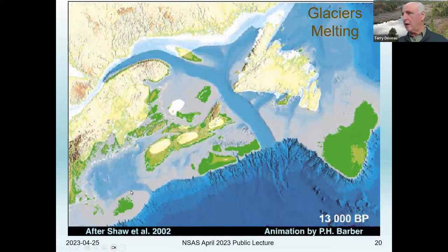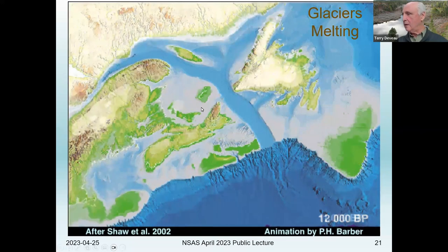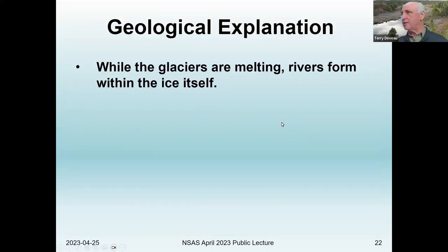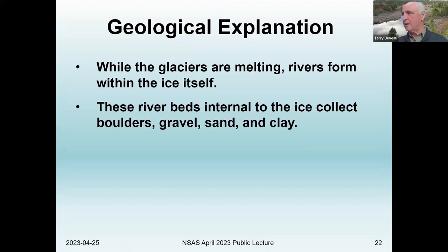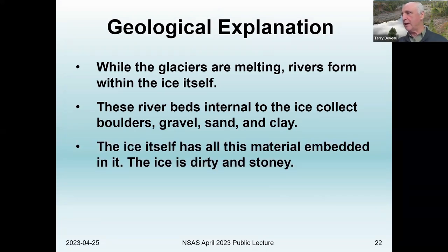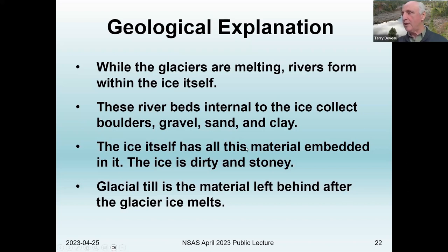In this part of the world, by about 13,000 years ago, there was a lot of dry land or ice-free land. Eventually it all melted — by 12,000 years ago there was still some glaciers in Newfoundland. While the glaciers are melting, rivers form within the ice, and these riverbeds can collect boulders together. They also create the till deposited in drumlins — the bottom part of a glacial lake that formed in the ice — or eskers, which are the remains of rivers that ran underneath the glacier.